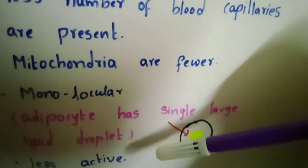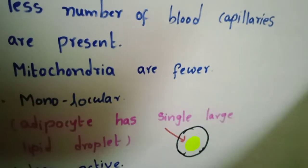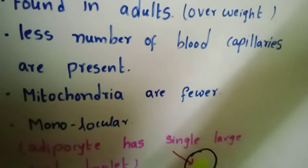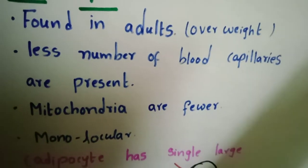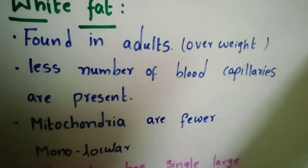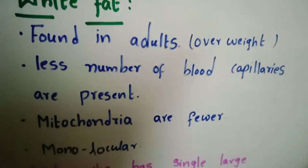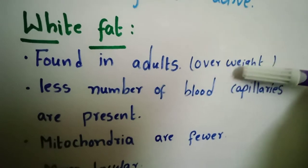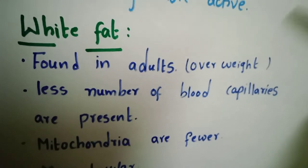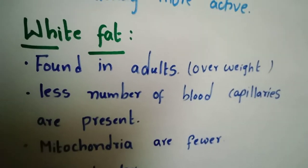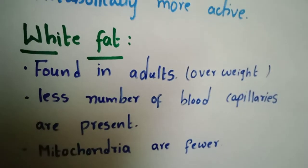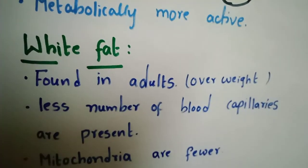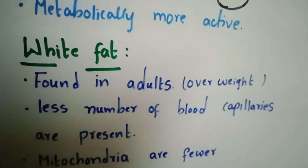White fat is very, very less active and cannot produce much heat, so they are metabolically less active and adults who contain it tend to be overweight. Mostly, white fat is found under the skin, while brown fat is mostly found in the shoulder blades.